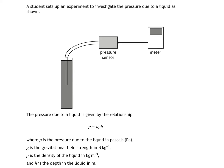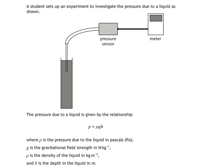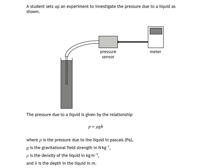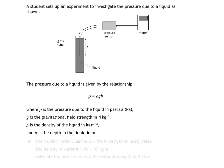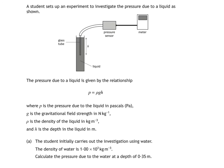What happens in the experiment is that the glass tube is moved downwards in the liquid and the pressure is measured at several depths below its surface. Part A: the student initially carries out the investigation using water. The density of water is 1.00 x 10³ kilograms per cubic metre. Calculate the pressure due to the water at a depth of 0.35 metres. The whole point of this question is to see how well you can manipulate unfamiliar equations. The only thing we'll have to do here is look up the value of g in the datasheet and plug it into the equation. No rearranging required.